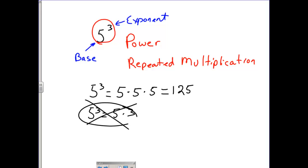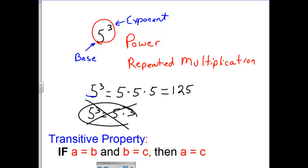Using the transitive property, we can see that 5 to the third is equal to 5 times 5 times 5, which is equal to 125. Therefore, 5 to the third equals 125.